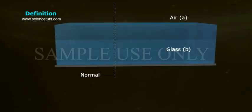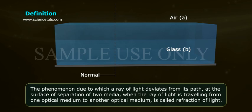Refraction. Definition: The phenomenon due to which a ray of light deviates from its path at the surface of separation of two media, when the ray of light is travelling from one optical medium to another optical medium, is called refraction of light.